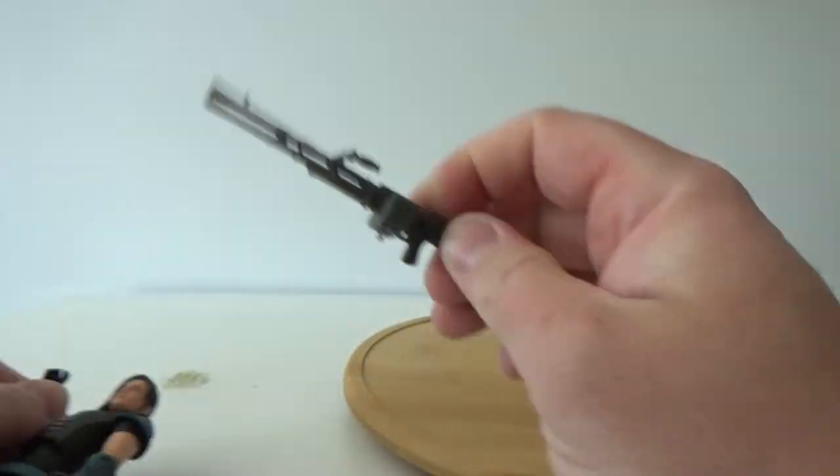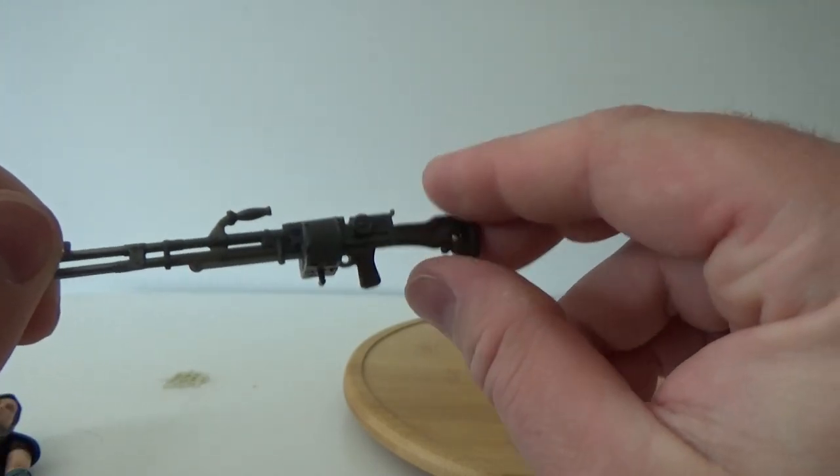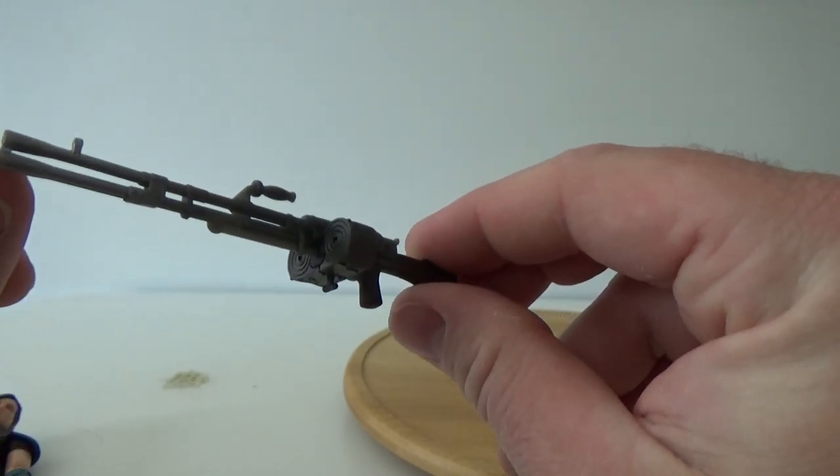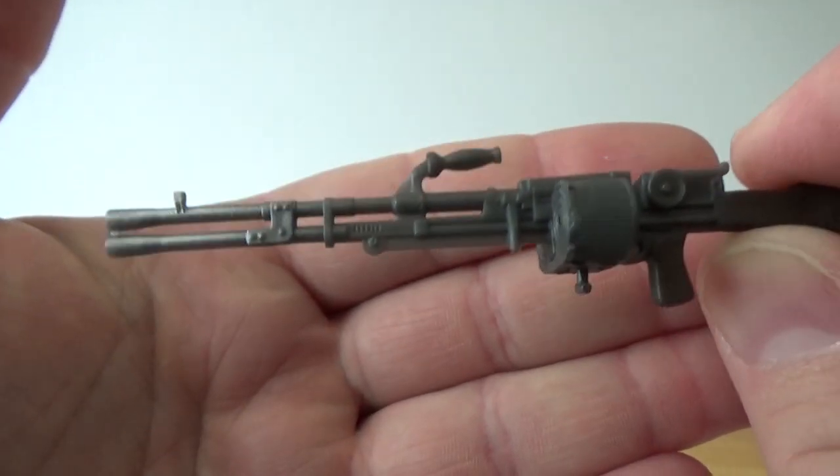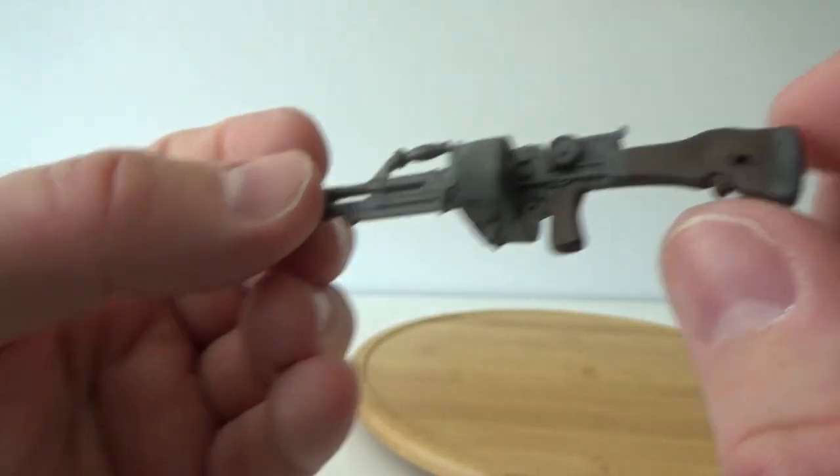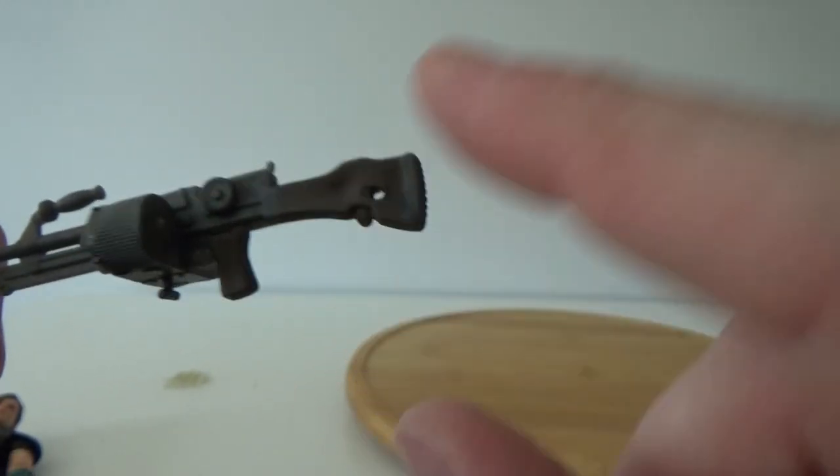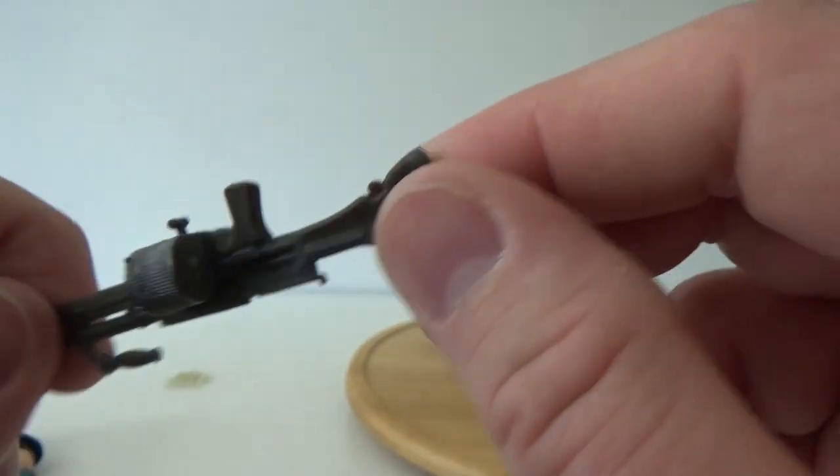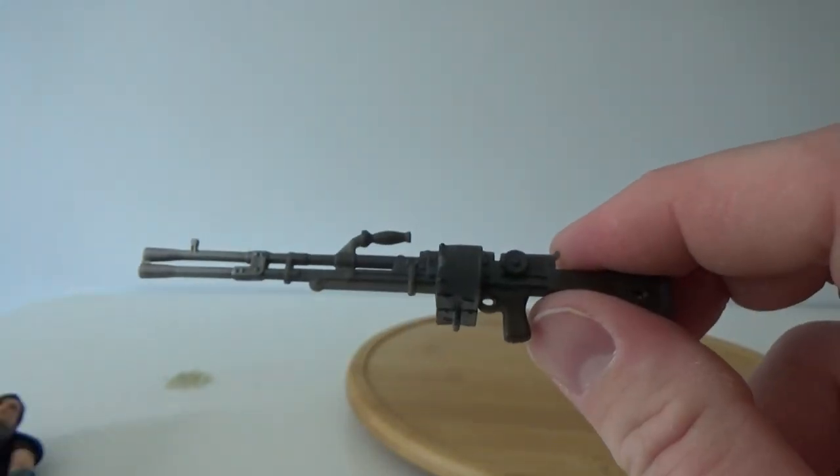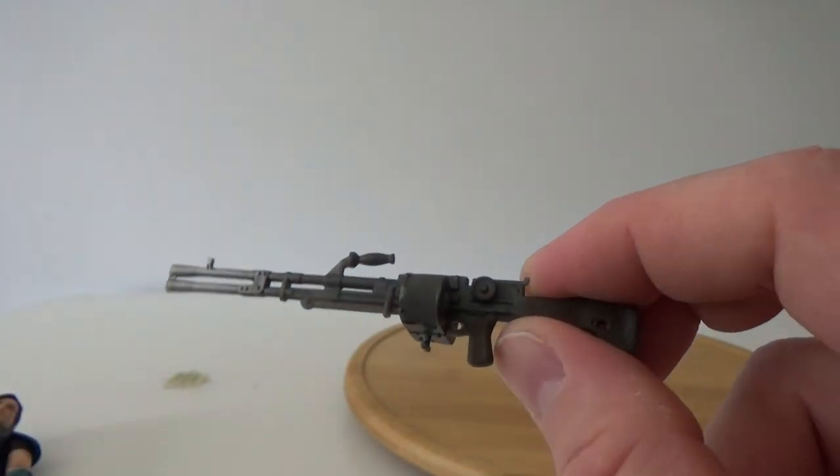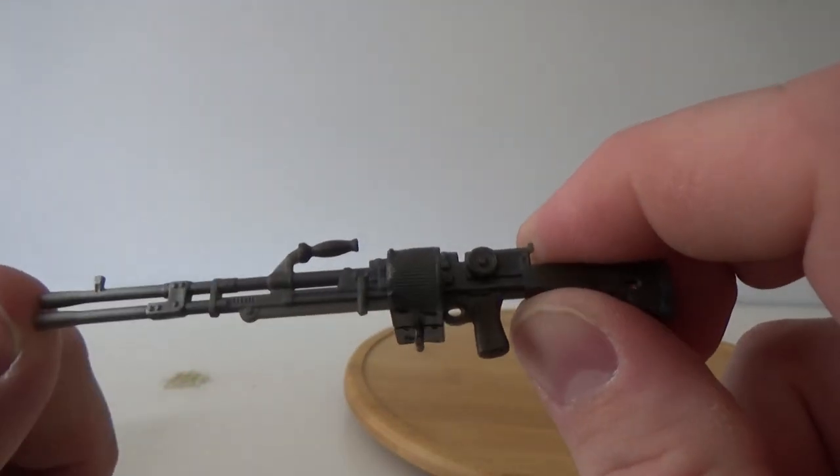She does come with this big blaster rifle. Which, unfortunately, is made of a bit of a dull plastic. They have sort of put some brown in at the stock end in the handle.